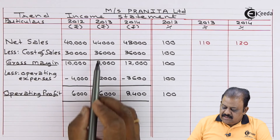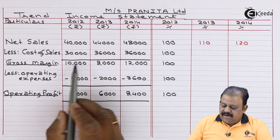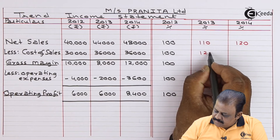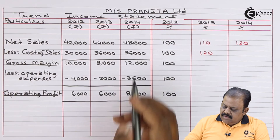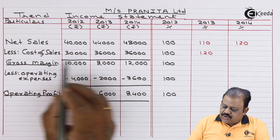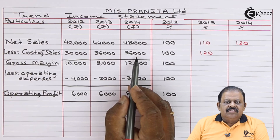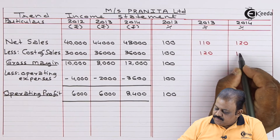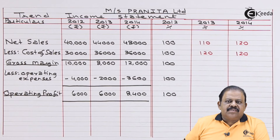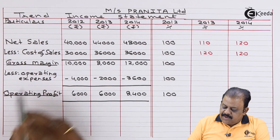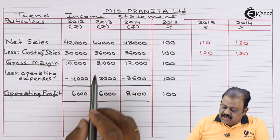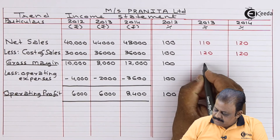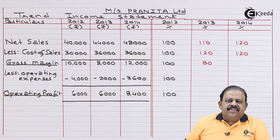Cost of sales for 2013: 36,000 divided by 30,000 multiplied by 100 equals 120 percent. In 2014 cost of sales is also 36,000 divided by 30,000 multiplied by 100, giving the same value of 120 percent. Gross margin for 2013: 8,000 divided by 10,000 multiplied by 100 equals 80 percent.